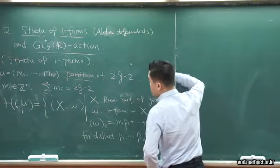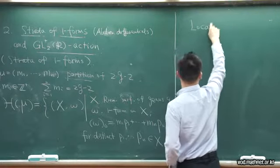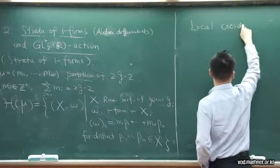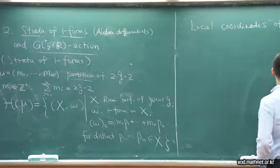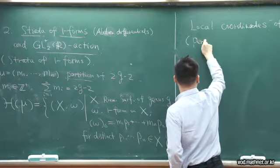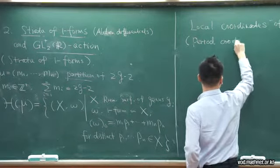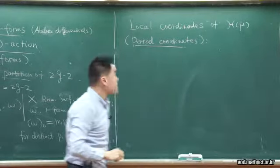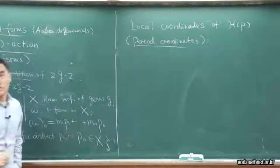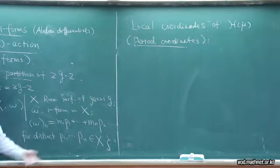Let me define or describe local coordinates for H_μ, called period coordinates. What you do is you pick a point in this space H_μ, a point corresponding to this data — a Riemann surface along with a one-form of this type.